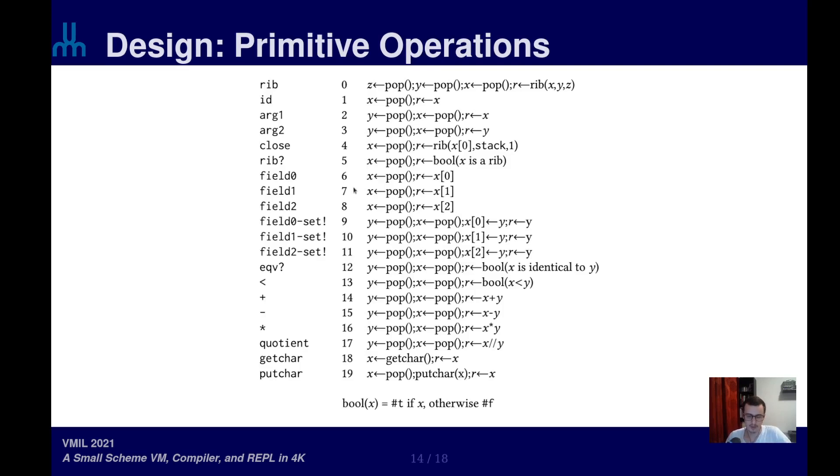I also mentioned that we implement some primitive functions so we are able to provide the full Scheme implementation. Here is the complete set of primitives implemented by the RVM. So a few of them pertain to I/O operations. A few pertain to manipulating RIBs, of course, because of the incremental compiler, notably. And one important one is the close primitive, which creates a closure by capturing the stack.